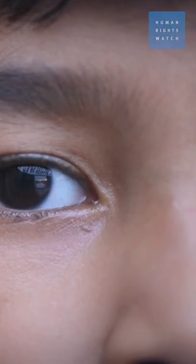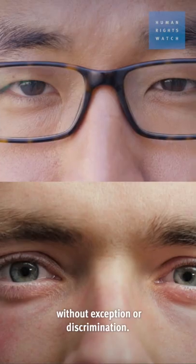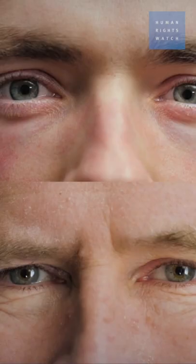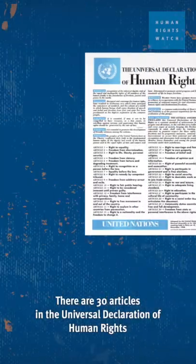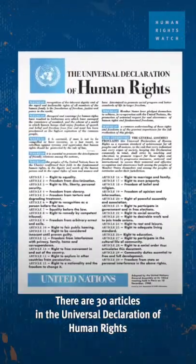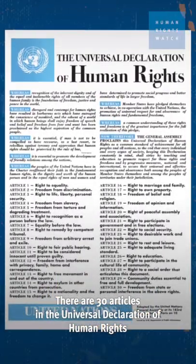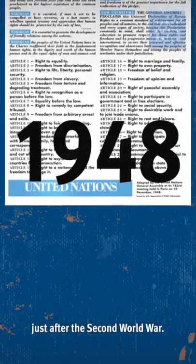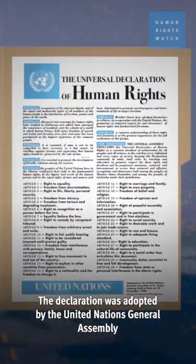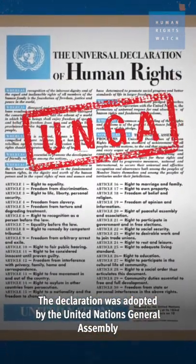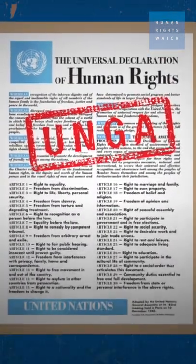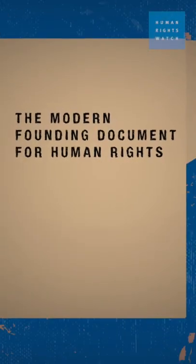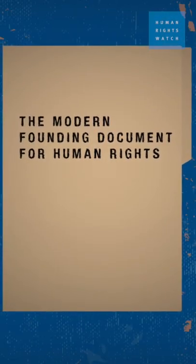And they belong to every person in the world without exception or discrimination. There are 30 articles in the Universal Declaration of Human Rights, a document that was created in 1948 just after the Second World War. The declaration was adopted by the United Nations General Assembly and is considered the modern founding document for human rights.